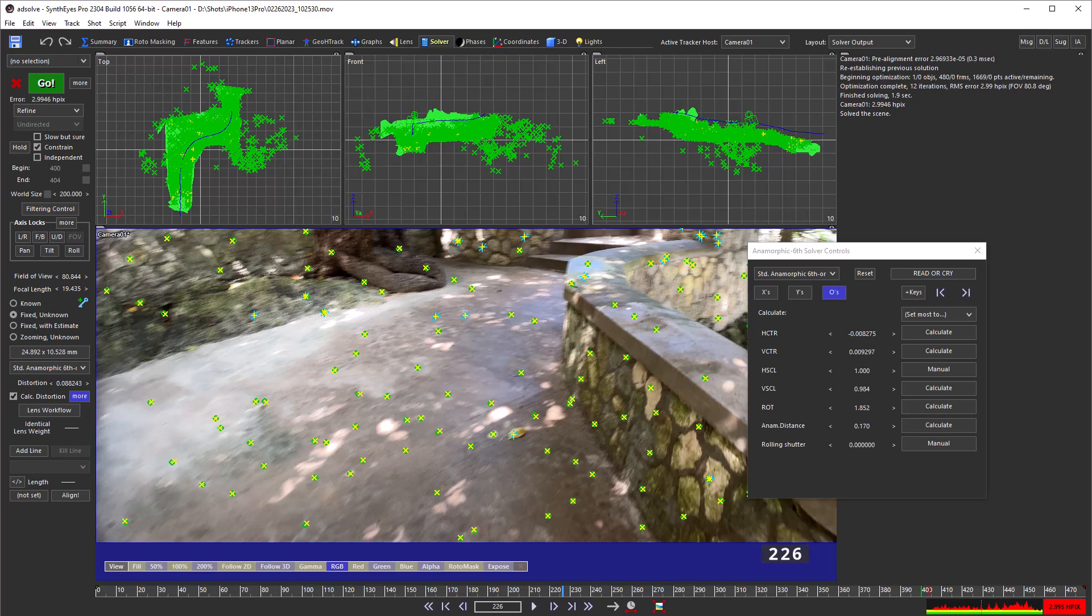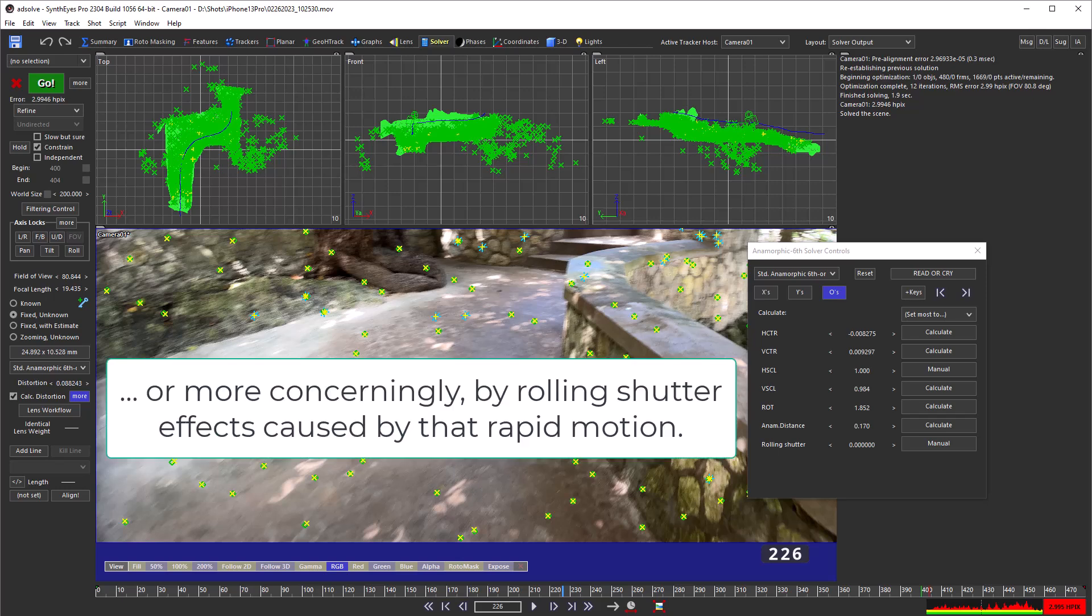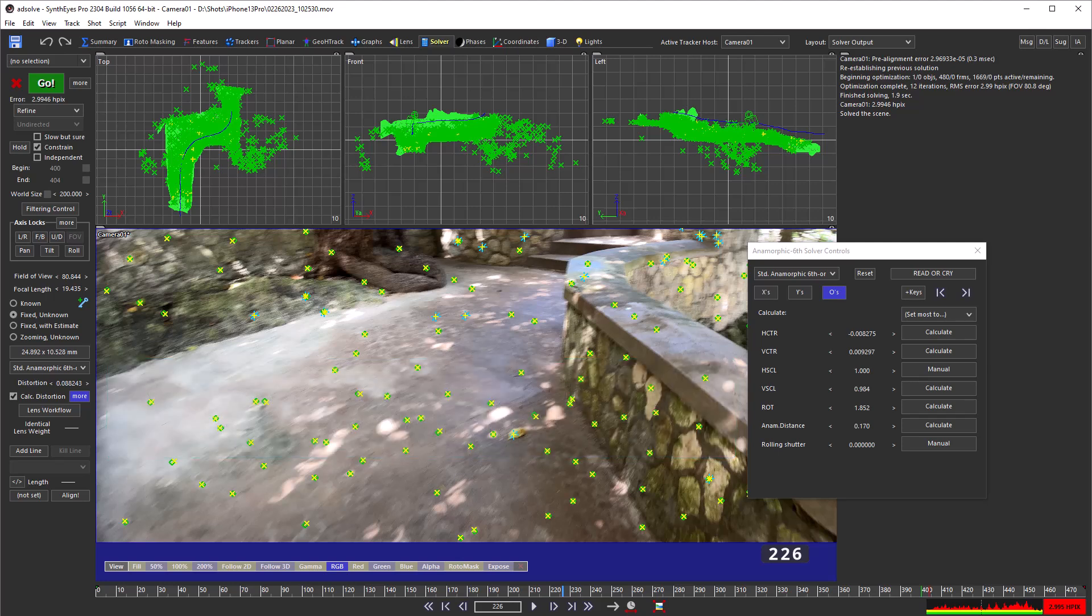It is possibly spurious, resulting from all the motion blur. You'll want to check whether it makes enough difference to the solve to keep it, considering the downstream complexity that it will cause. We'll take a look at that shortly.